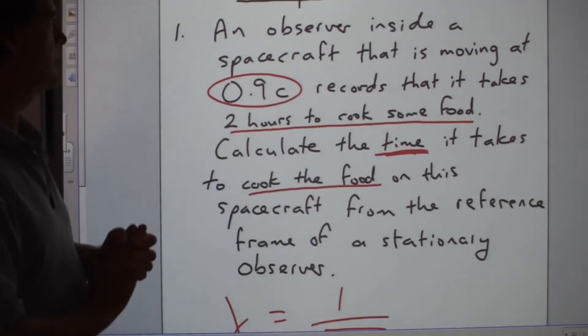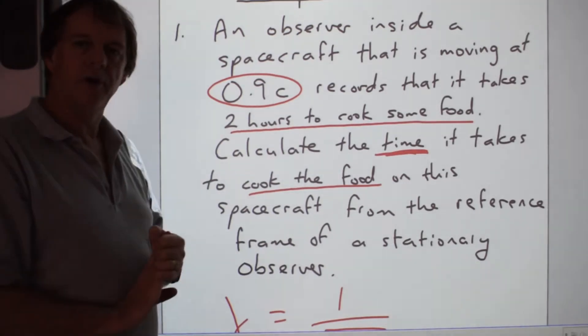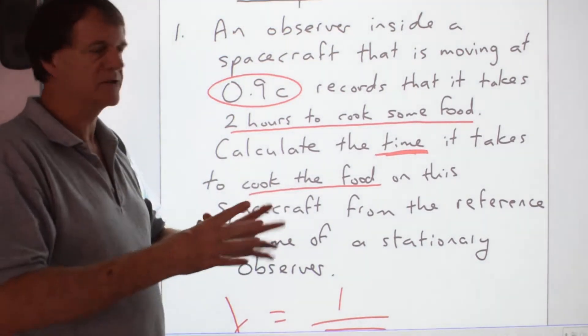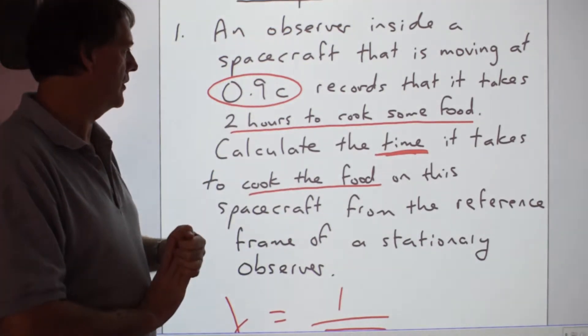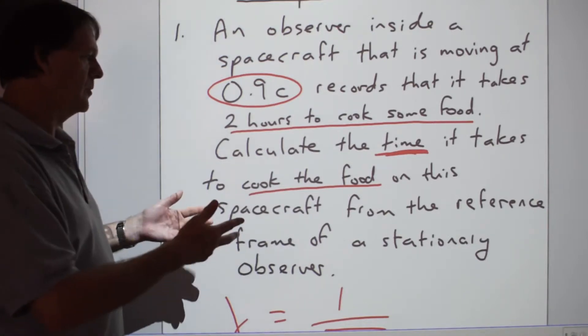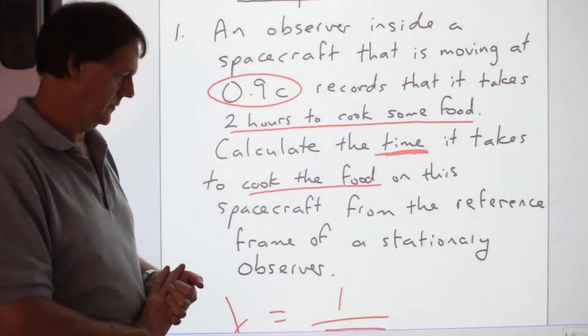As an example here, let's say you're going to observe inside a spacecraft that's moving at 0.9c and they record a time like, say, two hours to cook some food on their actual spaceship, moving at 0.9 the speed of light. You could be asked to calculate the time it takes to cook the food from the reference frame of someone who's stationary watching that event.